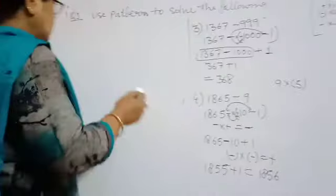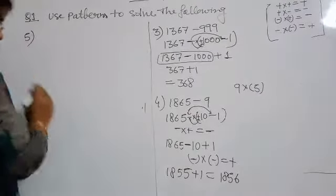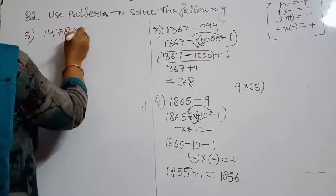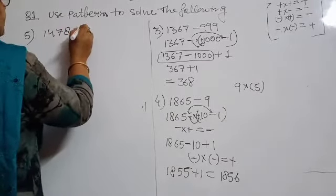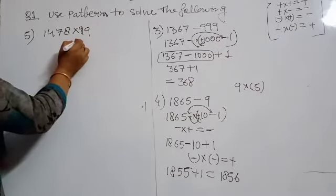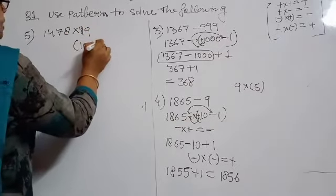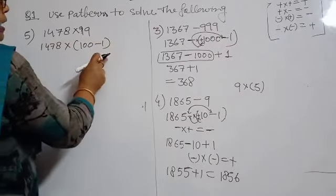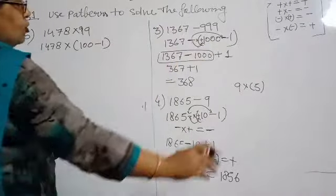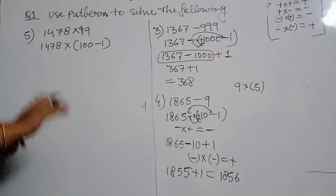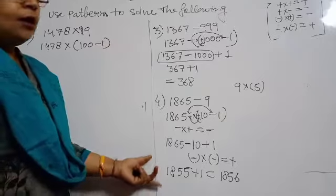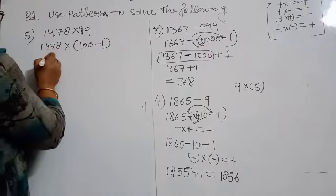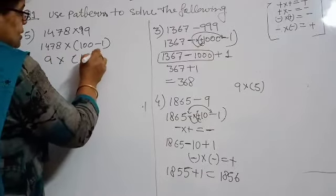I would like to do question number 5 now. Suppose we have 1478 multiplied by 99. We can write 99 as 100 minus 1. For addition and subtraction we were using only the pattern, but here we also have a property — the distributive property: A into (B minus C) equals A into B minus A into C. Here A is 1478, B is 100, and C is 1.